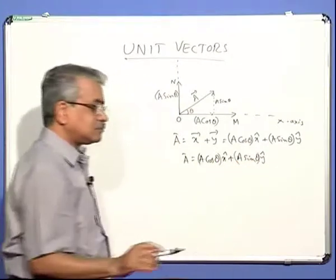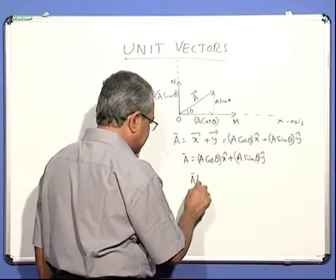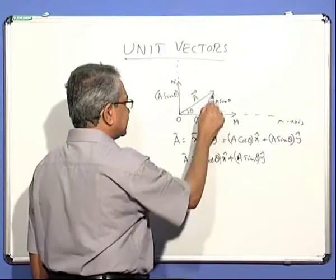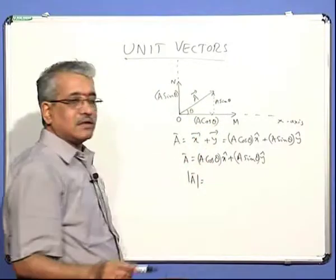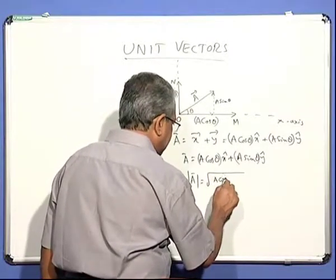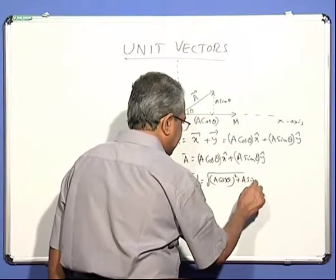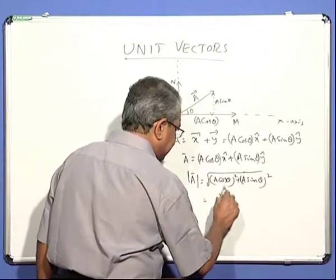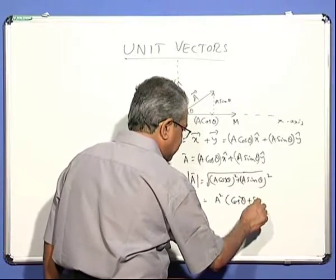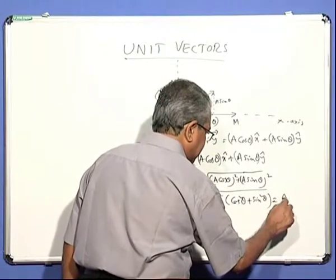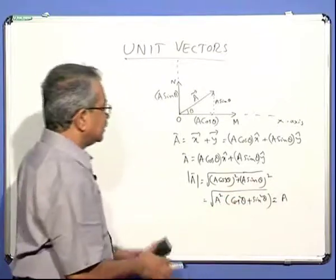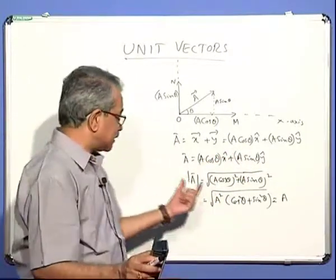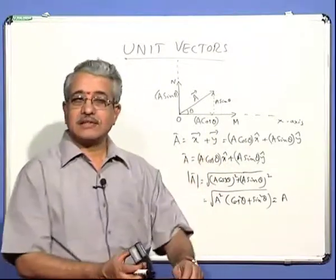What is the magnitude of A from this notation? Taking the right-angle triangle formed by the components: |A| = √[(A cosθ)² + (A sinθ)²] = √[A²(cos²θ + sin²θ)] = √[A² × 1] = A. Since cos²θ + sin²θ = 1, the magnitude of A is confirmed to be A. So by the unit vector representation, the components are represented separately and the magnitude is correctly recovered.